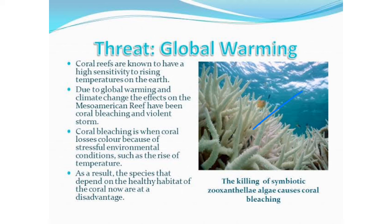As a result, species that depend on the healthy habitat of the coral are at a disadvantage and will not be able to thrive. The main component causing this is the killing of symbiotic zooxanthellae algae, which causes coral bleaching.